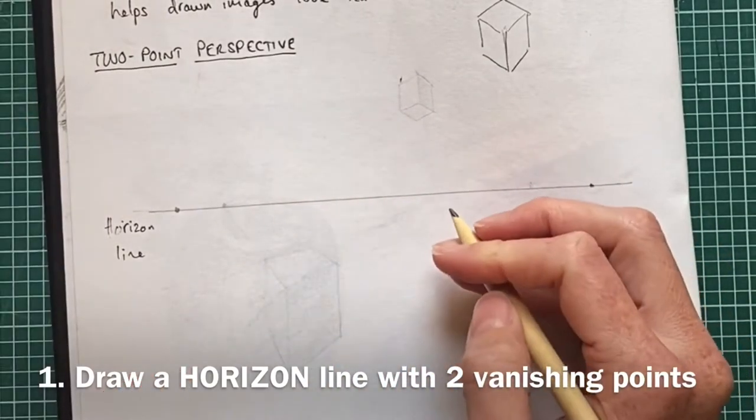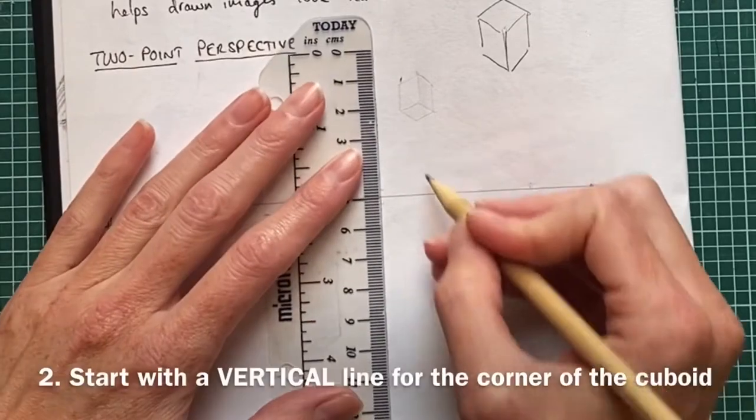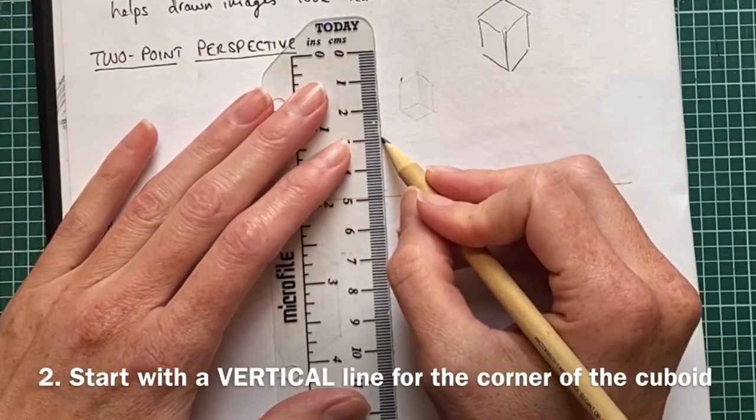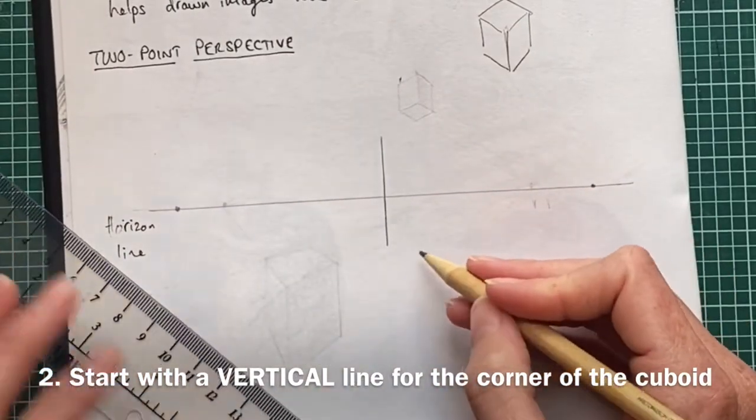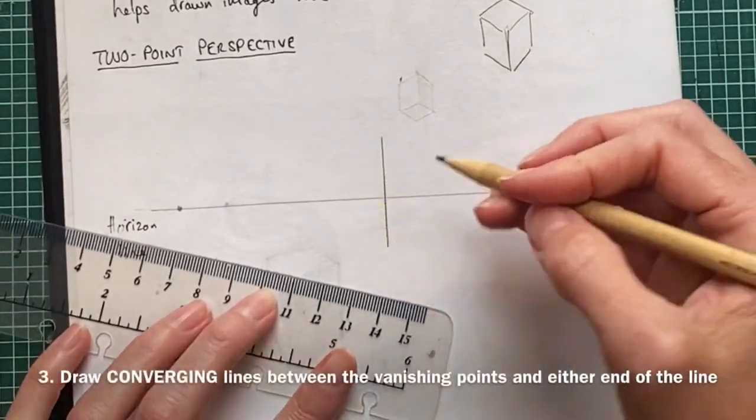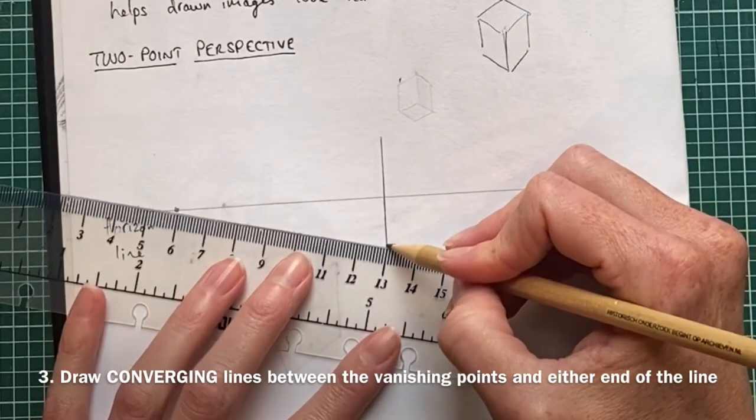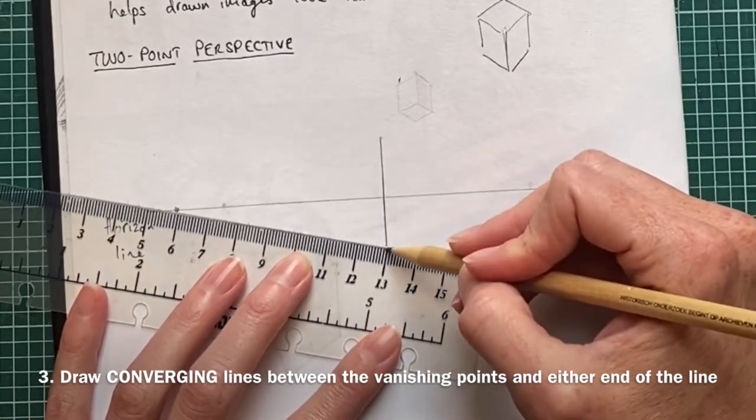First of all, I'll just do a vertical line down through it. Then I need to do some converging guidelines, nice and light ones, to both vanishing points from either end of this vertical line.